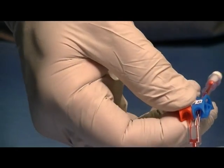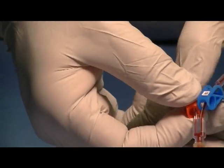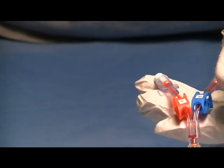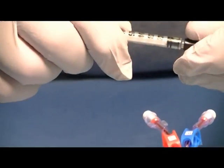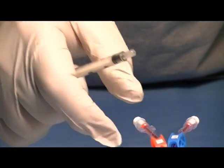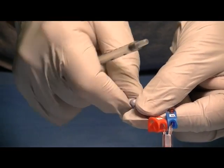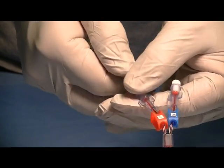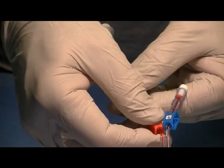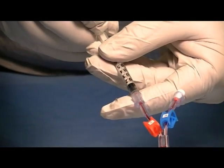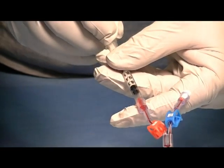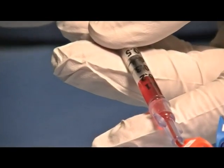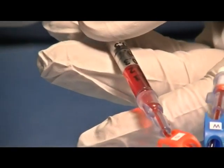At that point, you would reclamp the red clamp and get the blood gas syringe, remove the white vent plug and attach the blood gas syringe. Unclamp the red clamp and draw back the appropriate volume of blood sample that you need, .2 for example for a blood gas.